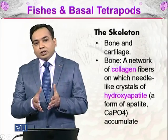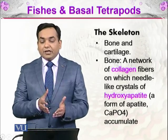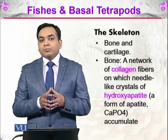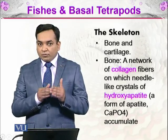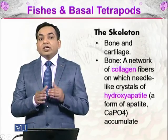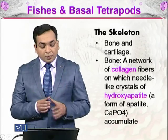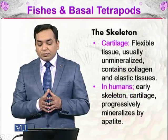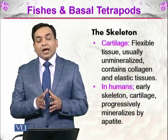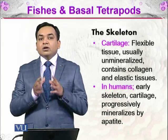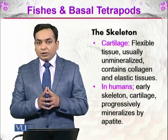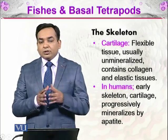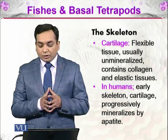Another support structure is cartilage. Cartilage is somewhat flexible, having more flexibility, and it is able to grow more as compared to bone. The cartilage is a flexible tissue, usually unmineralized, and contains collagen and elastic tissue. Bones and cartilage combine to make the skeleton, which in turn will evolve into the vertebral column.